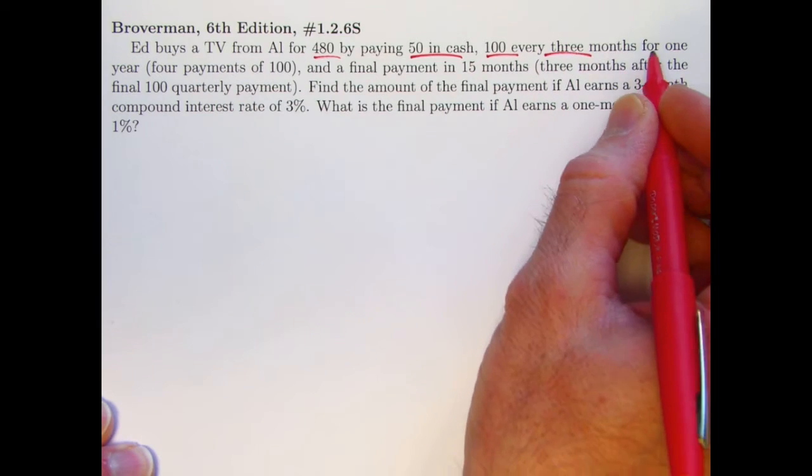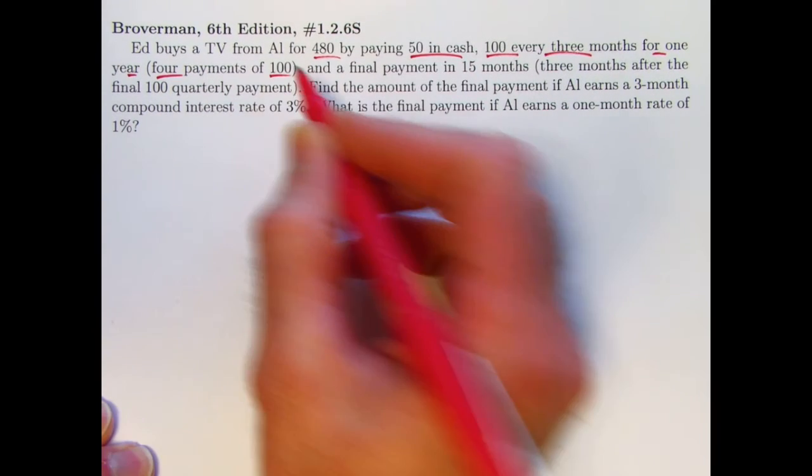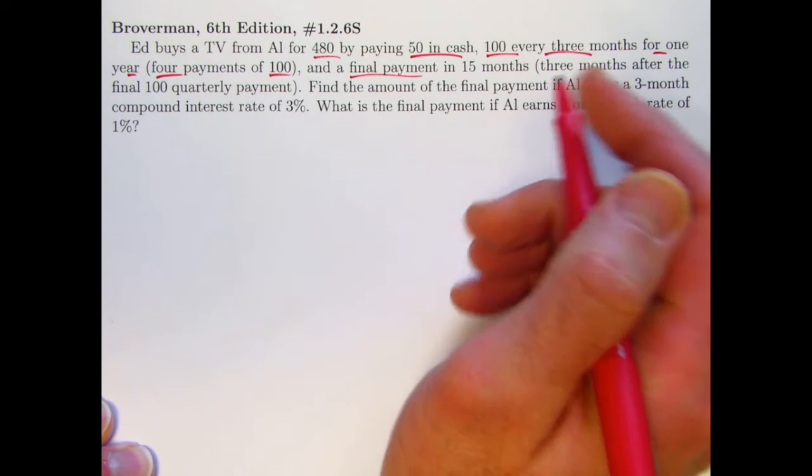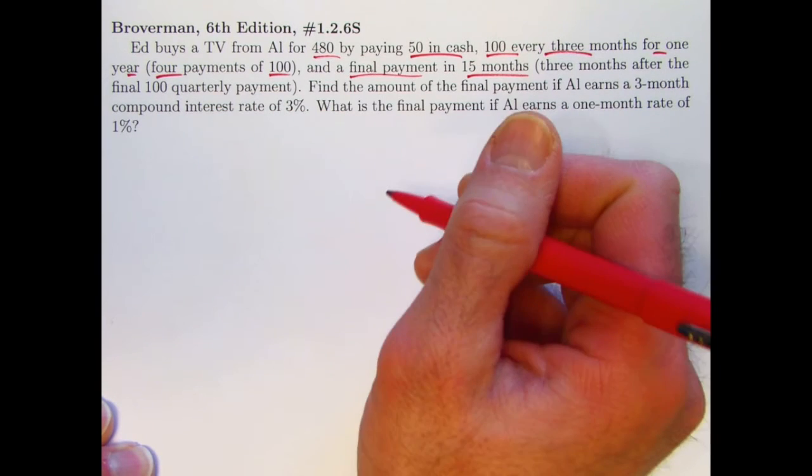$100 every three months for one year, so that's four payments of $100. And then a final payment, an unknown final payment that we're going to solve for in 15 months, which will be three months after the final $100 quarterly payment.